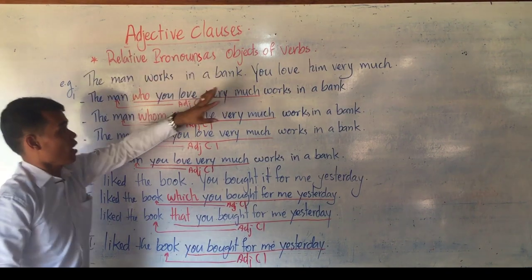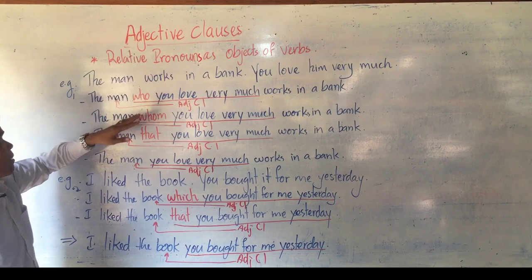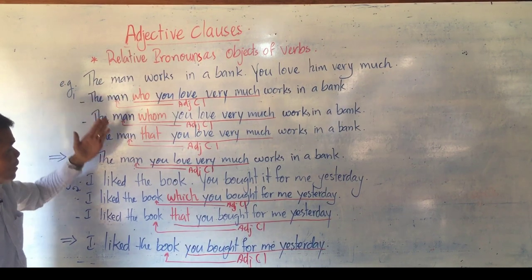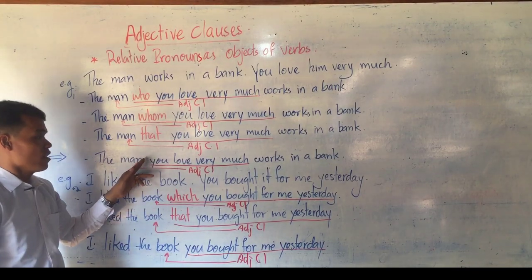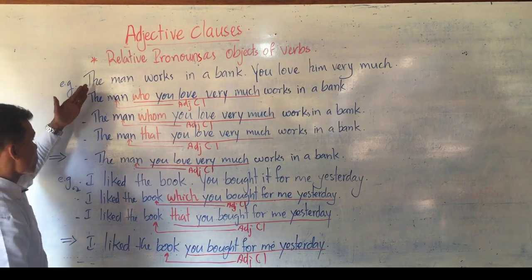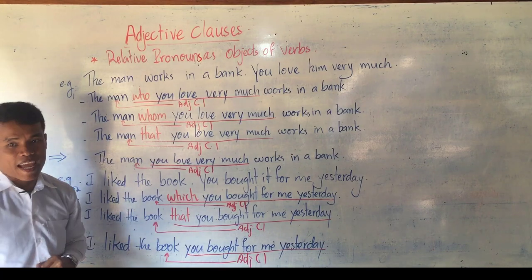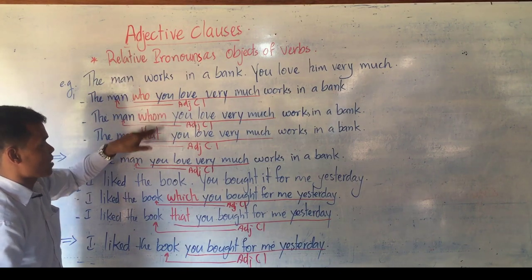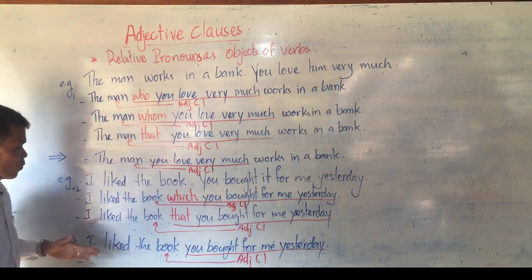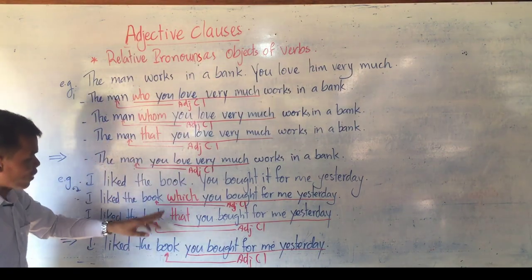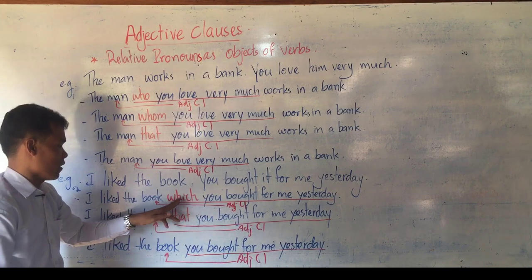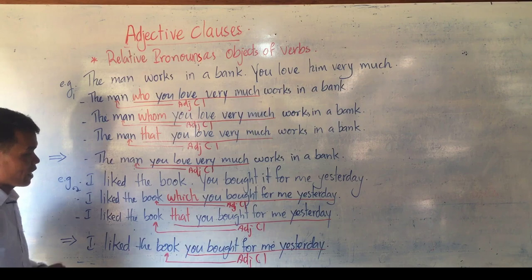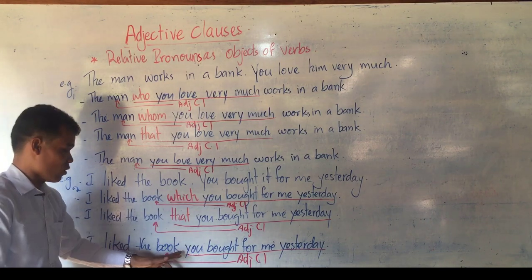Again, a relative pronoun as the object of a verb can be left out. In the examples, when the relative pronoun functions as an object we can write in four ways: with who, whom, that, and the last one without who, whom, or that. It is still called an adjective clause. But of these four sentences, which one is the best answer? The best answer is with whom, because whom is used for a person and functions only as object. For a thing, we can write in three ways: which, that, or without a relative pronoun. The best answer is which. Omitting the relative pronoun is only used in informal contexts.